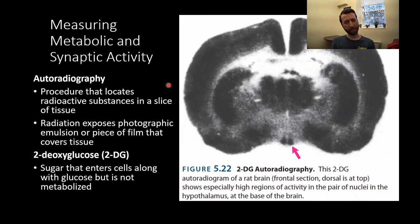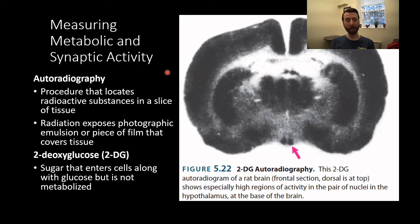A slightly more modern version uses a radioactive ligand that binds to a specific receptor, which you then place with film to show where that receptor is primarily localized. There are cleaner and easier ways of getting that information now, primarily using immunocytochemistry and fluorescence, which work much faster and with more precision — but it's worth mentioning from a historical perspective.